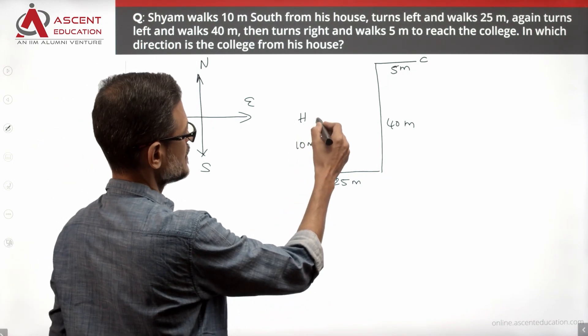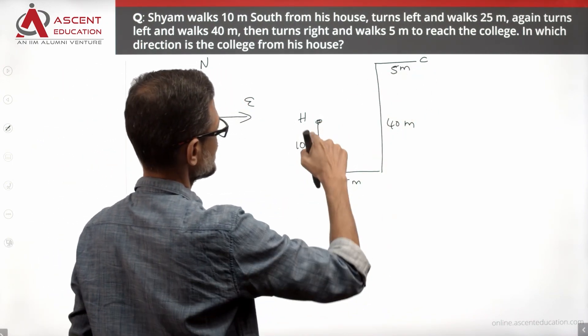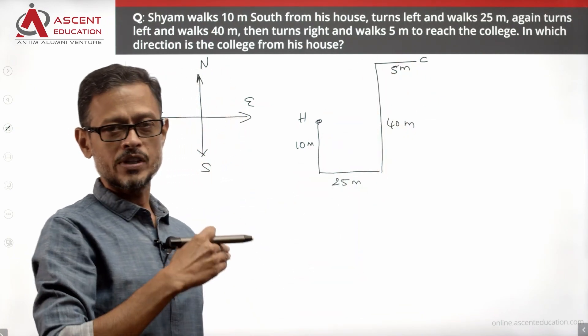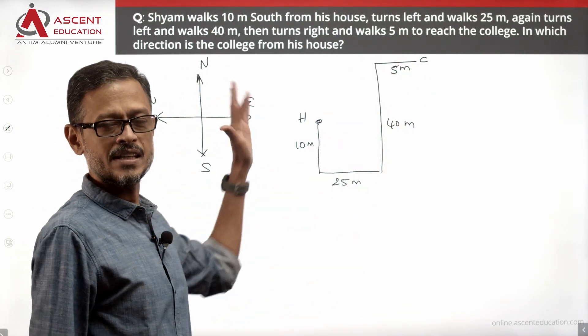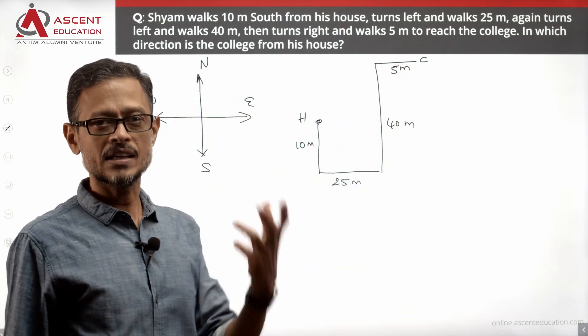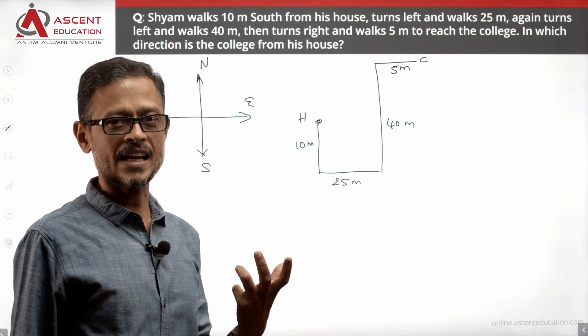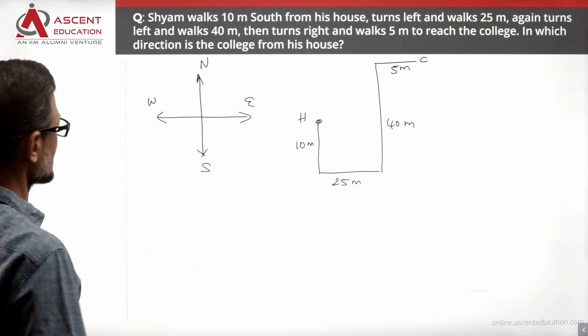So from his house, the college is here in this direction. The college is to the right, it is upward. If it is towards the right, it is east. If it is upward, it is north. So his college is in the northeast direction from his house. Choice A is the correct answer to this question.